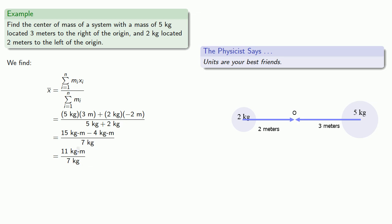The dash in units represents multiplication, so we have a common factor of kilograms in numerator and denominator, which we can cancel, giving us our final answer. This is the location of the center of mass: 11/7 of a meter. Since this is positive, it's to the right of the origin.